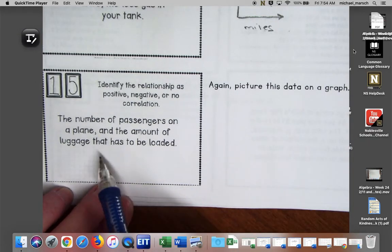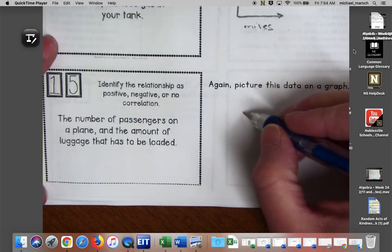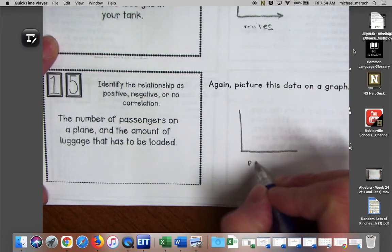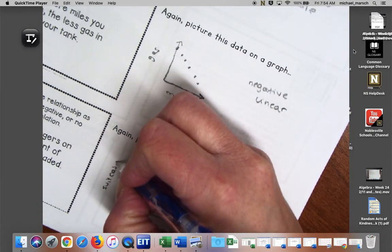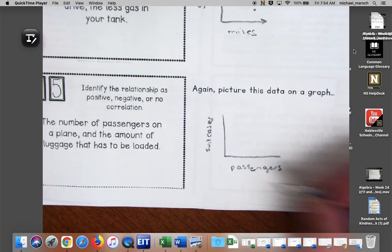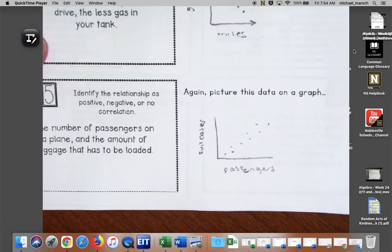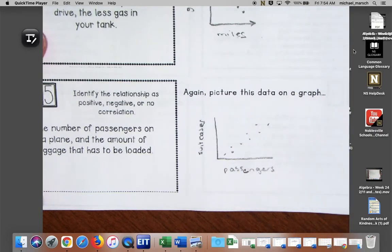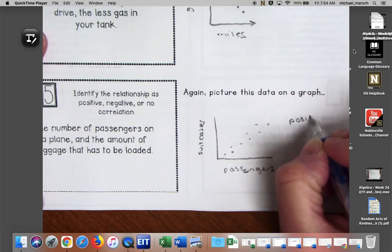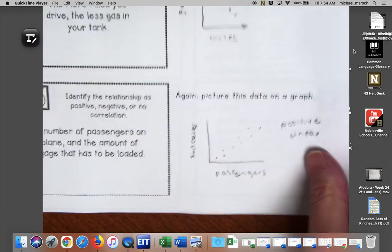Let's look at 15. Identify the relationship as positive, negative, or no correlation. The number of passengers on a plane and the amount of luggage that has to be loaded. Theoretically the more passengers you have, the more suitcases, right? Not to say that one person can't bring one and another person brings like five, I don't know how bad you pack, but either way the more passengers, the more suitcases you're going to have. So this would be a positive and then our form would be linear.